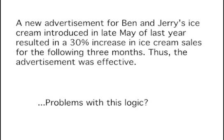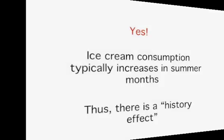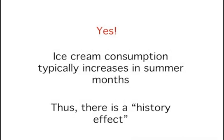Are there any problems with this logic? Yes. A major flaw is that ice cream consumption generally increases in the months of June, July, and August, regardless of advertisements. This effect is called a history effect and leads people to interpret outcomes as a result of one variable when another variable — in this case one having to do with the passage of time — is actually responsible.